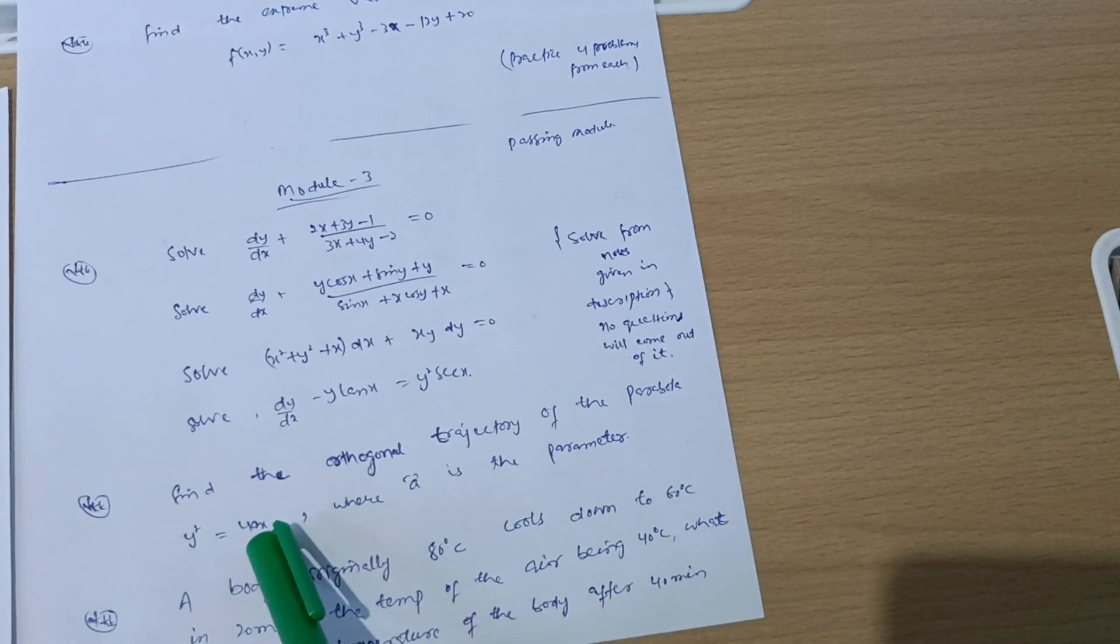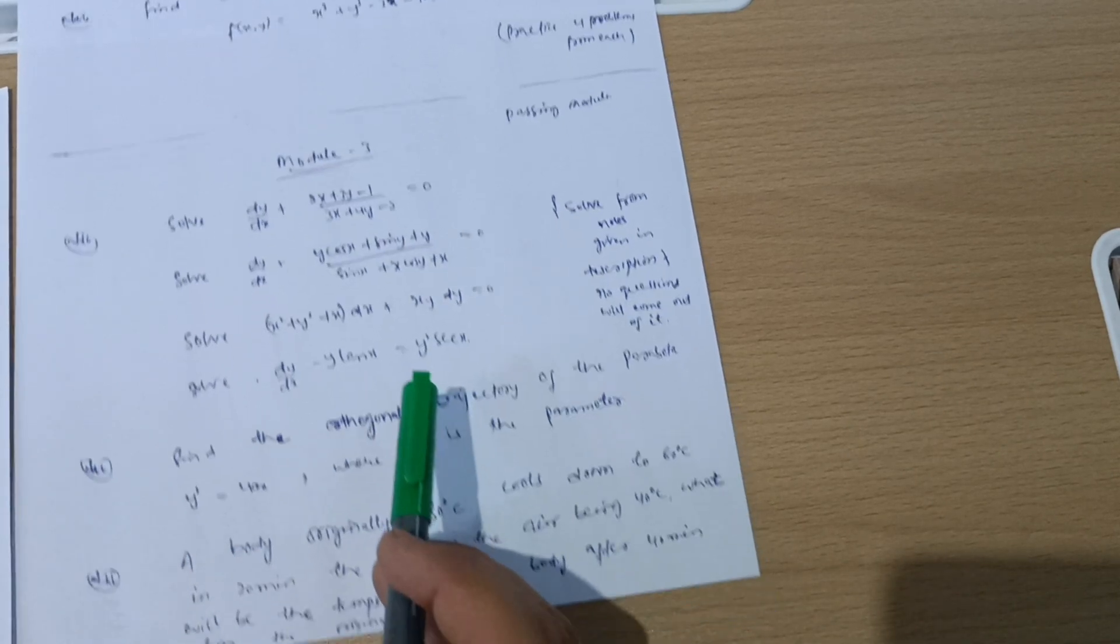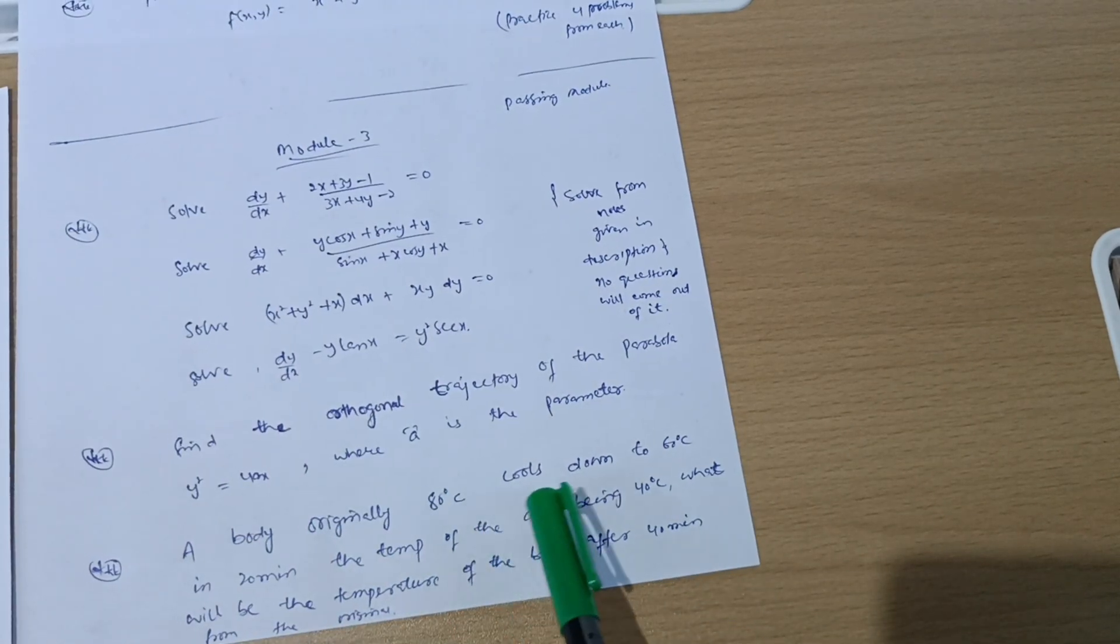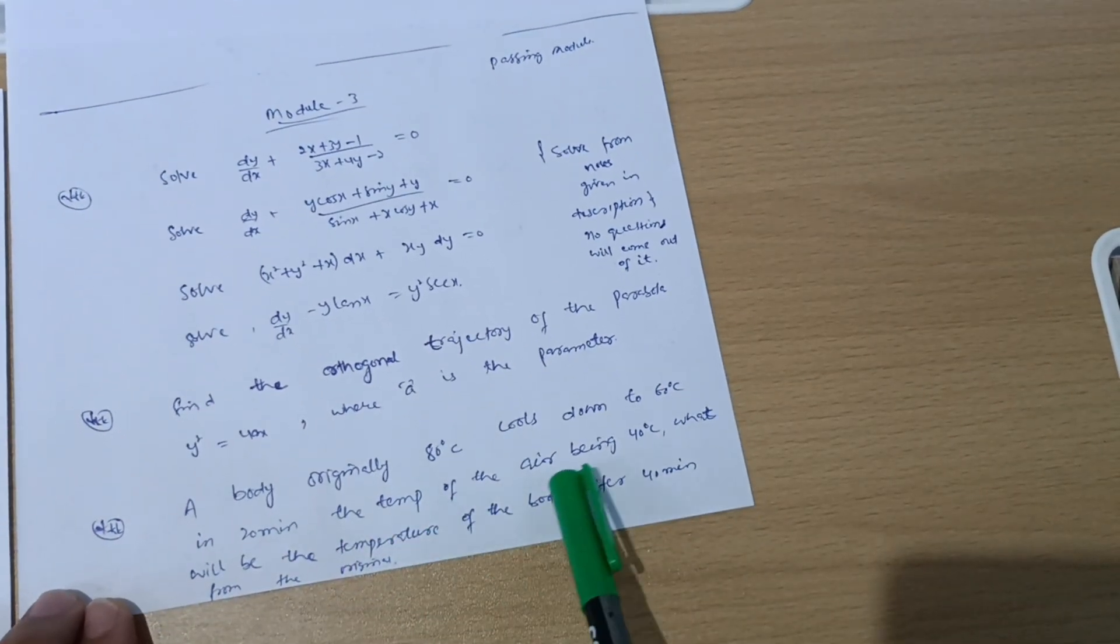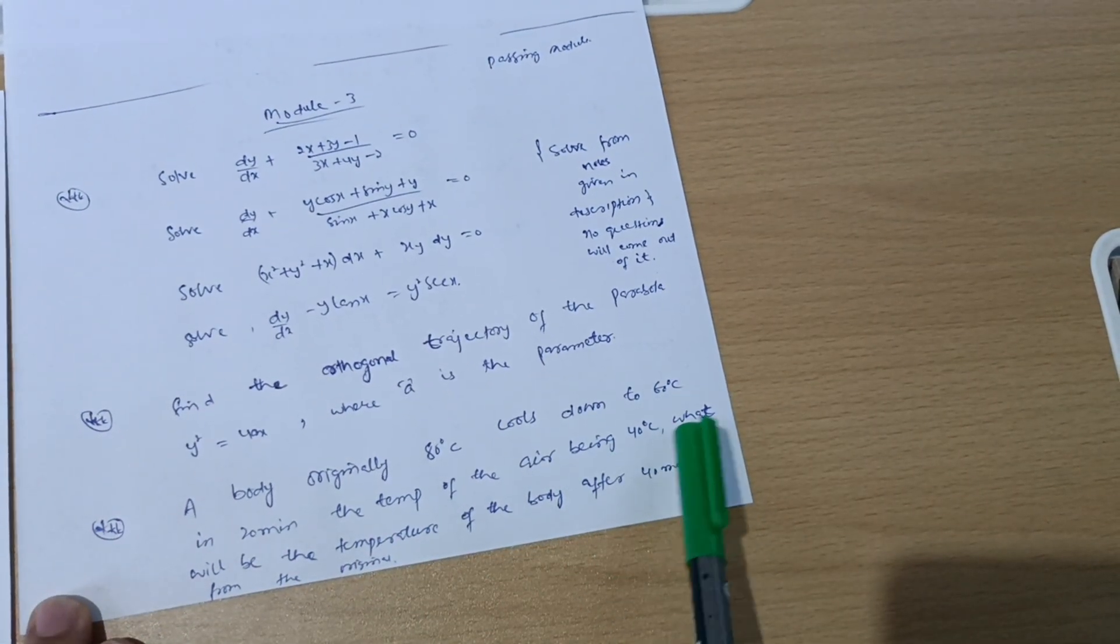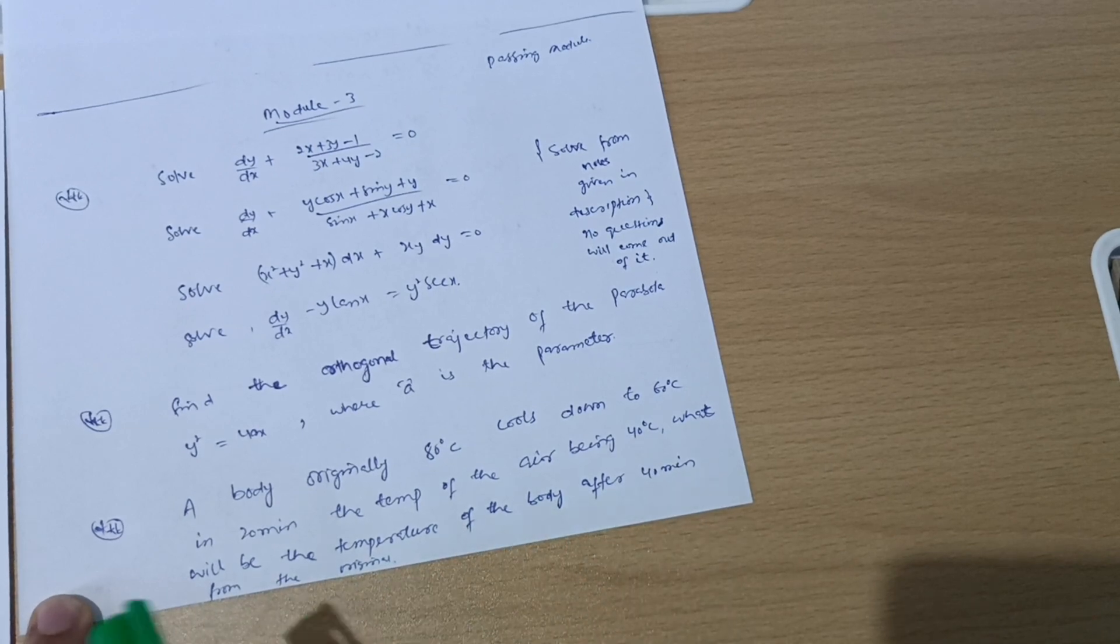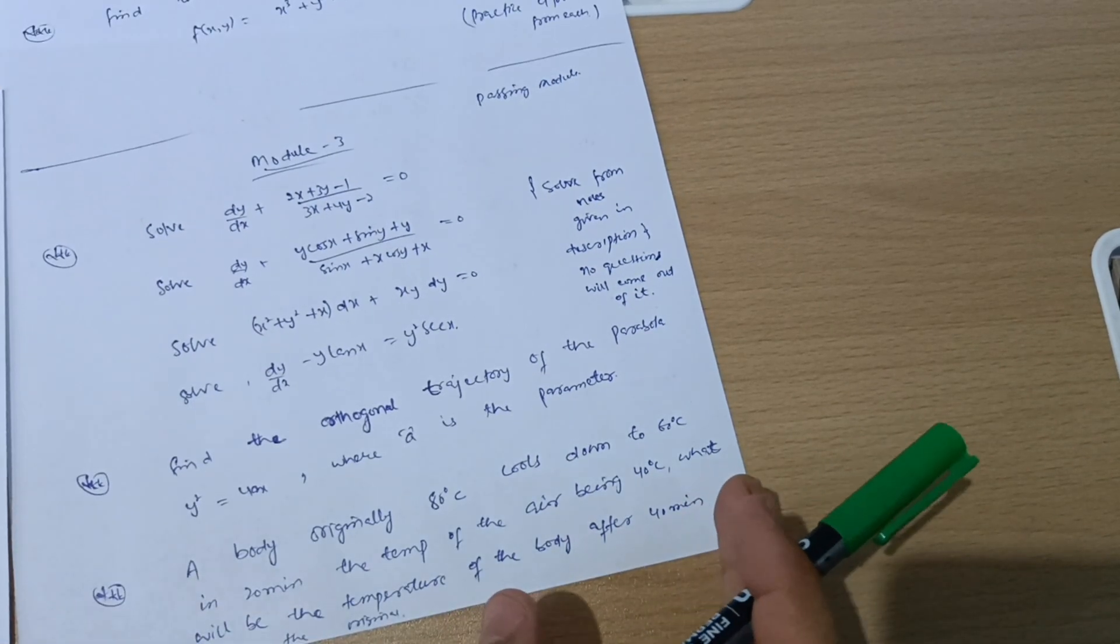Next we have: find the orthogonal trajectory of the parabola y² = 4ax, where a is the parameter. A body originally 80 degrees centigrade cools down to 60 degrees centigrade in 20 minutes. The temperature of the air being 40 degrees centigrade, what will be the temperature of the body after 40 minutes from the original?